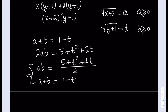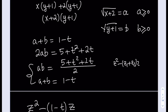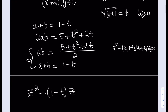Let's set up the quadratic equation whose roots are a and b. I'll use a different variable z to represent both a and b. Using the standard form where sum and product of roots are known, the equation looks like this: z squared minus (a plus b)z plus (a times b) equals 0. Substituting our expressions for the sum and product gives us the quadratic in z.